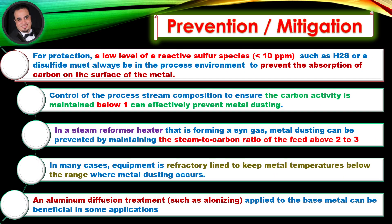Prevention and mitigation: For protection, a low level of a reactive sulfur species — typically less than 10 parts per million — such as hydrogen sulfide or a disulfide, must always be present in the process environment to prevent the absorption of carbon on the surface of the metal.